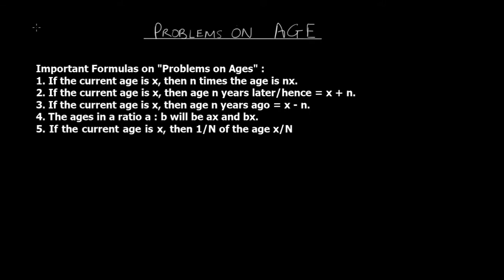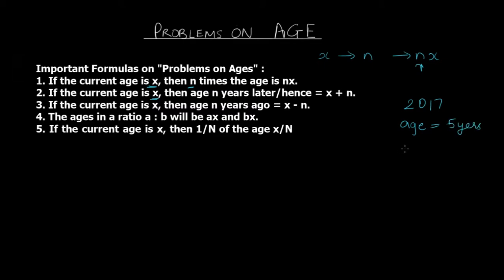Point 1: if the current age of any person is x, then n times the age is nx. We are simply multiplying the age by n, so that gives us nx — n is a multiplying factor. Point 2: if the current age is x (the present age), then the age n years later would be x plus n. For example, if in 2017 the age is 5 years, then after 3 years in 2020 the age is 5 plus 3, which is 8 years.